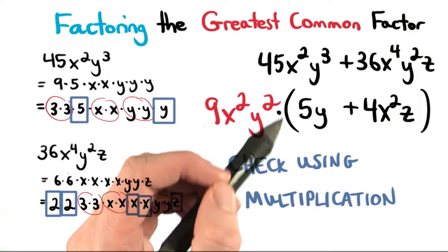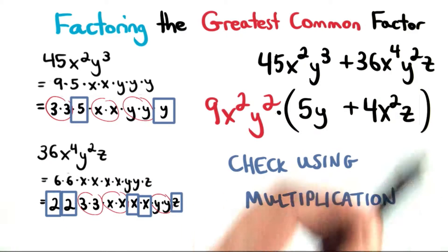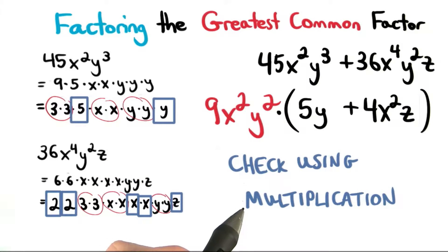When we factor an expression like this, we're finding two numbers or expressions that multiply together to give us what we originally started with. We can quickly check by using multiplication.